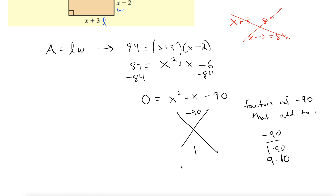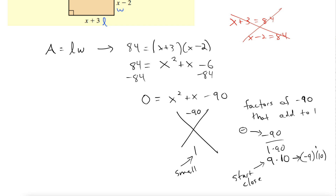If you have a small number for b, small number here, and a negative c, start close. So we have 9 and 10. We want this to add to 1 but multiply to negative 90. So let's fix up the negative signs. Let's do negative 9 times 10. That gives us negative 9 plus 10 equals 1, which is what we want. And negative 9 times 10 is negative 90.